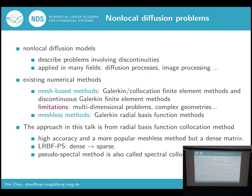These mesh-based methods need mesh generation, which means they cost a long computational time for generating mass matrices and remeshing. This limits these methods in solving high-dimensional problems efficiently. Moreover, the accuracy of these methods also depends on the quality of the mesh, so accuracy cannot always be guaranteed for problems with complex geometry. In order to tackle these two limitations, meshless methods have developed very fast and more and more people are paying attention to them. For non-local problems, the Galerkin radial-basis-function method has been studied in several papers.